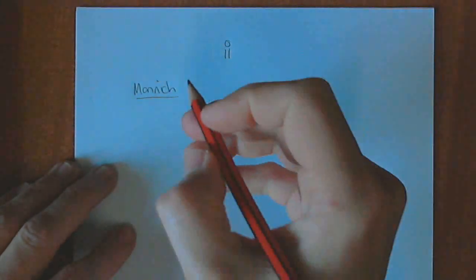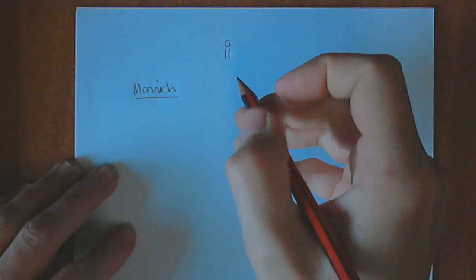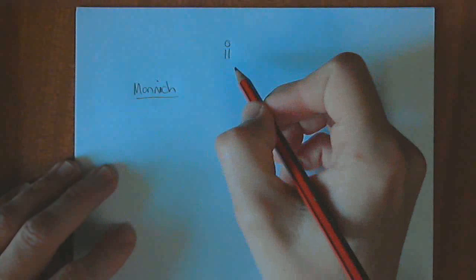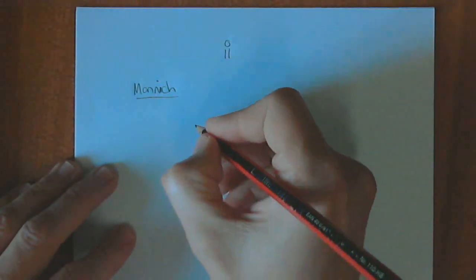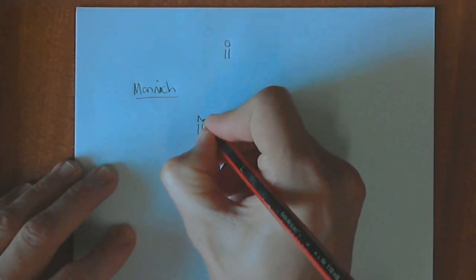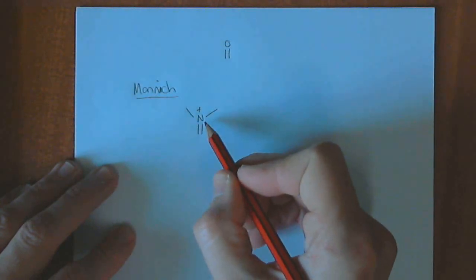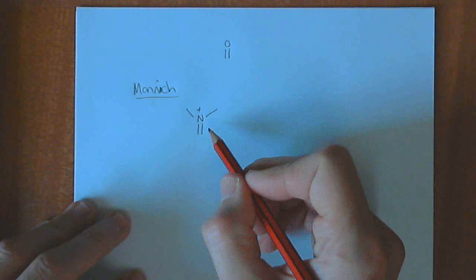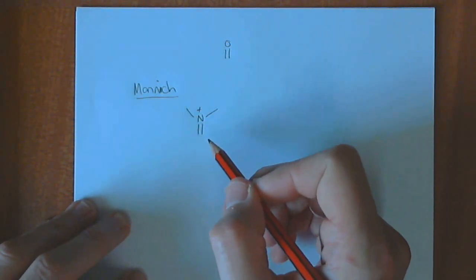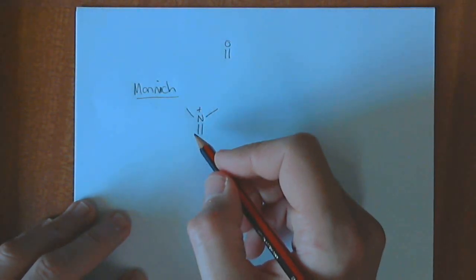The Mannich reaction is essentially similar, but what we're looking at is not the reaction of an aldehyde, but rather an iminium species that is generated in situ. This is effectively the nitrogen analog of an aldehyde, and the iminium can act as an electrophile. We've seen some examples of that already.